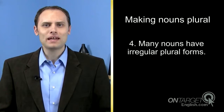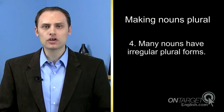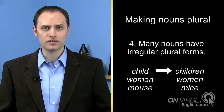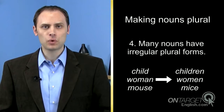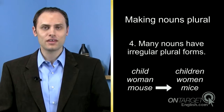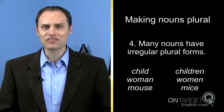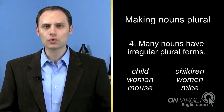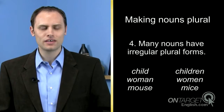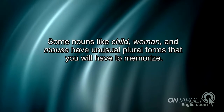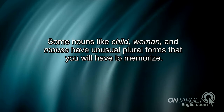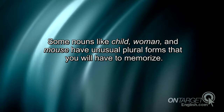Fourth, many nouns have irregular plural forms. Child becomes children. Woman becomes women. Mouse becomes mice. I don't recommend trying to follow rules to figure out irregular plural forms. Some nouns like child, woman, and mouse have unusual plural forms that you will have to memorize.